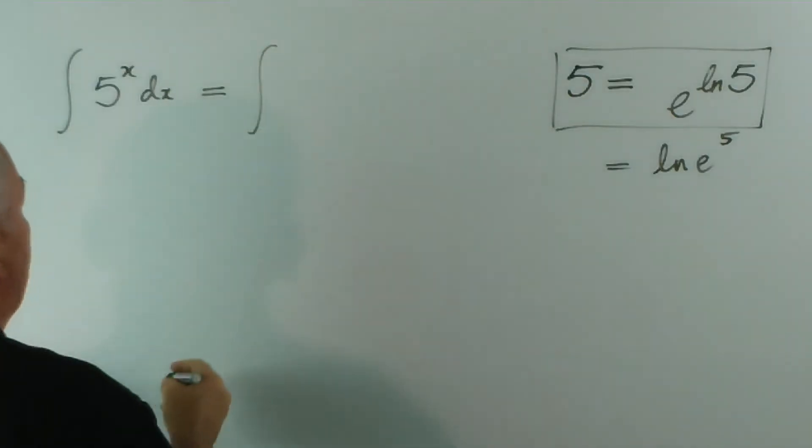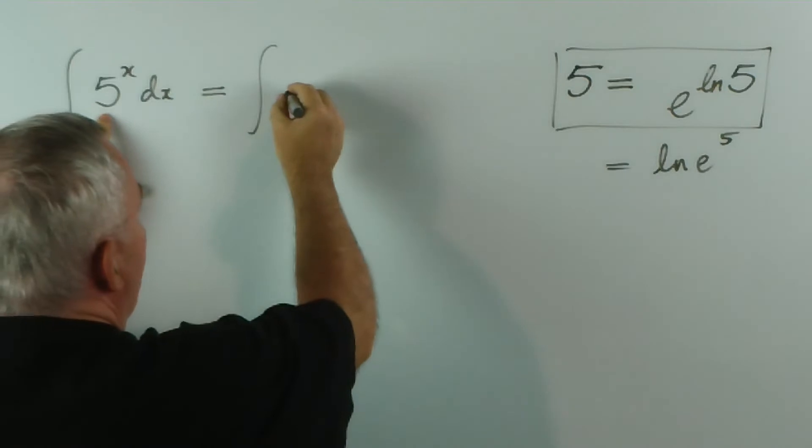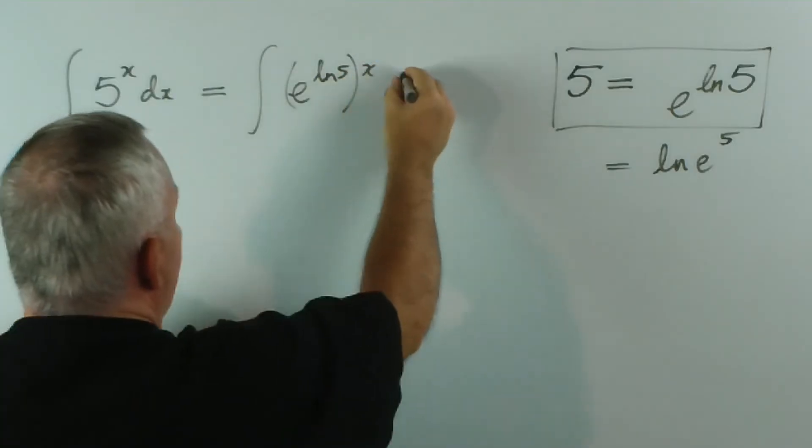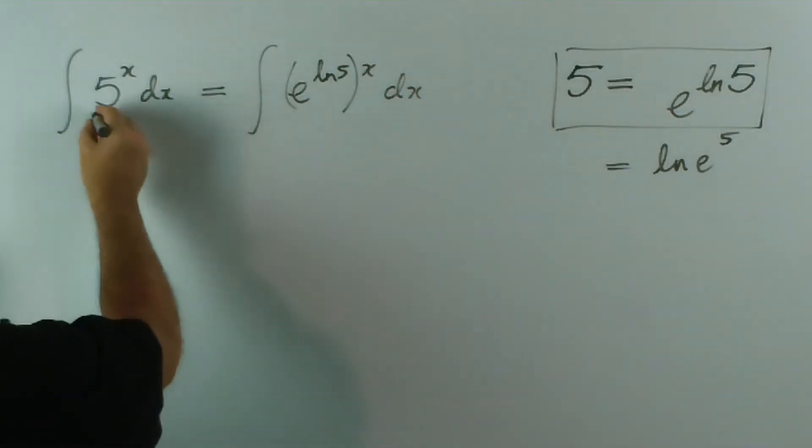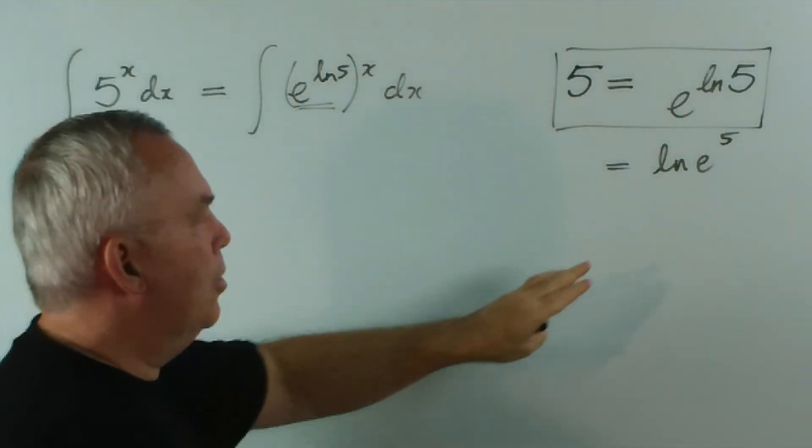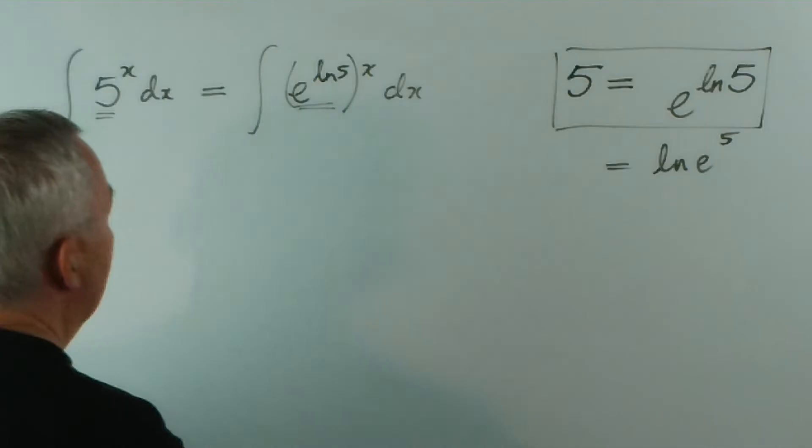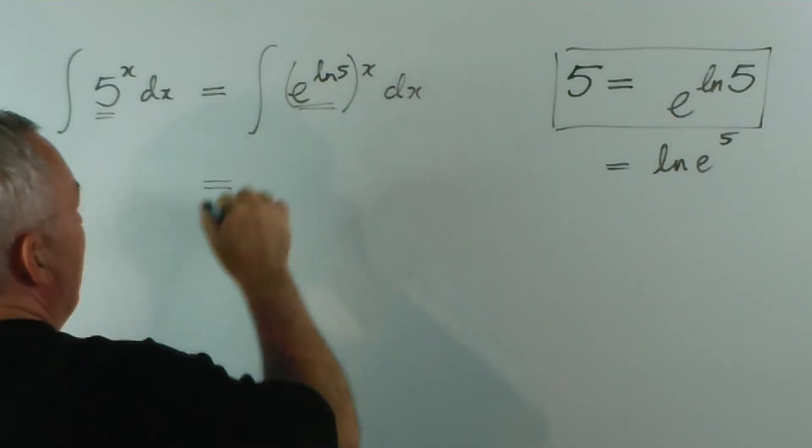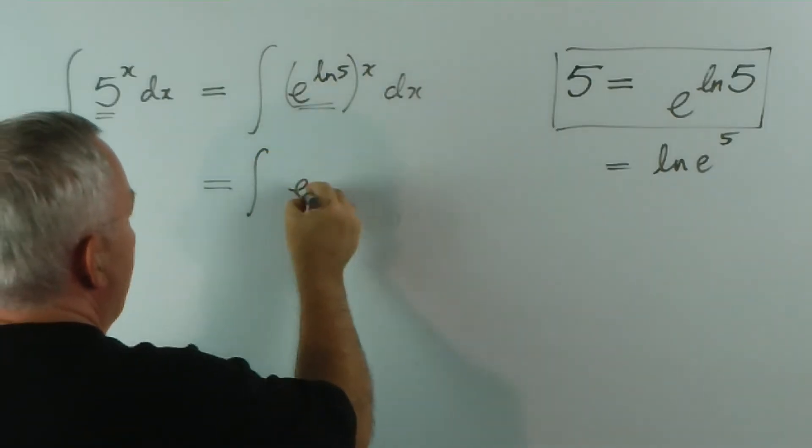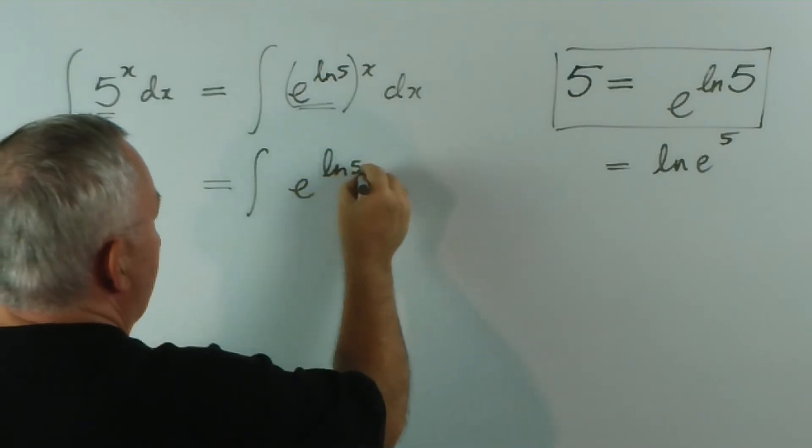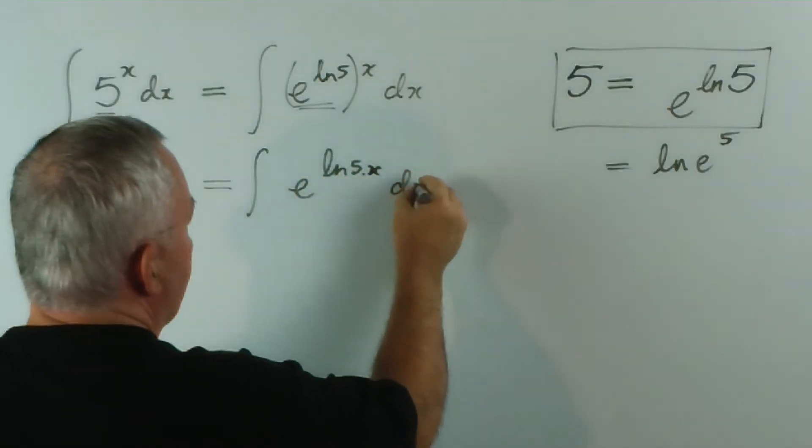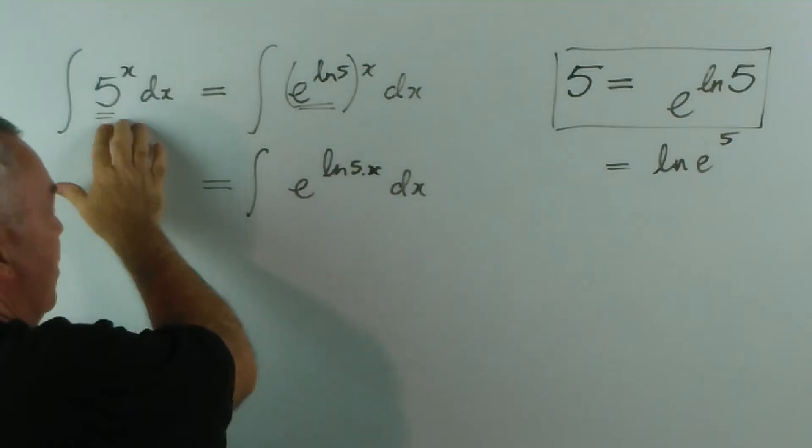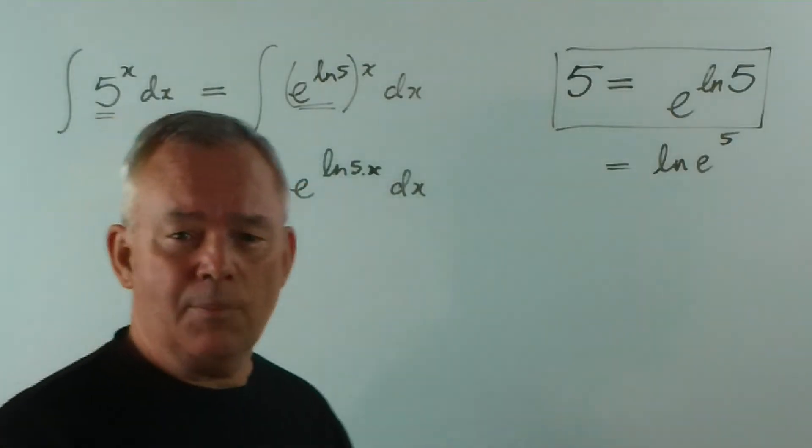So this would become, replacing the 5 with e to the log 5, all to the power x dx. So all we've done now is replace that 5 using our knowledge of inverse functions. When you have a power of a power of e, you multiply the powers. So this is the same as the integral of e to the log 5 times x dx. Now we've succeeded in converting this exponential into an exponential involving e, which is our preferred form.